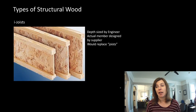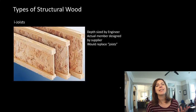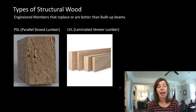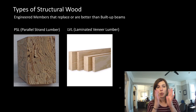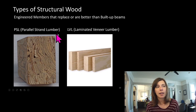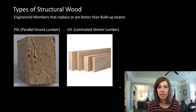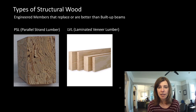PSL and LVL are engineered members that we would use in the context of residential framing or smaller-scale framing. They perform slightly better than our built-up beams — those plies of 2x4s or 2x6s all the way up to 2x12s screwed together. You can make built-up members of these as well. PSL is parallel strand lumber and LVL is laminated veneer lumber. We're not going to be doing the calculations on these, but I just want to refresh you on the nomenclature. And then glulam — we can do beams, posts, we can curve it.